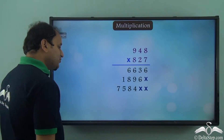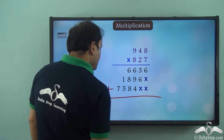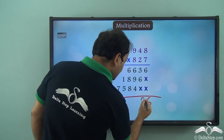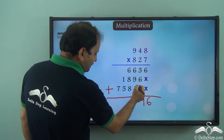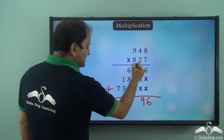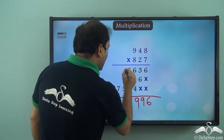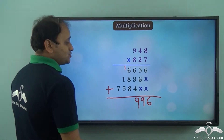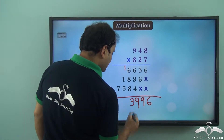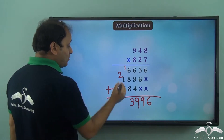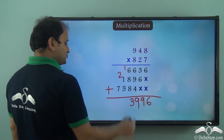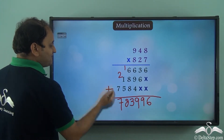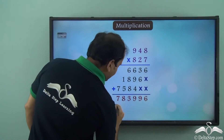So now what we will do? We will add these — we will perform addition. So 6 will come down as it is. Here we have 6 plus 3 is 9. Here we have 4 plus 9 that is 13, and 13 plus 6 is 19. So we take 9 and 1 is carried over. Now we have 8 plus 8 plus 8 that is 16, plus 6 is 22, plus 1 will be 23. So 3 comes here and 2 is carried over. Now 5 plus 1 is 6, 6 plus 2 is 8, and 7 comes down as it is. So we have 783996 as the final answer.